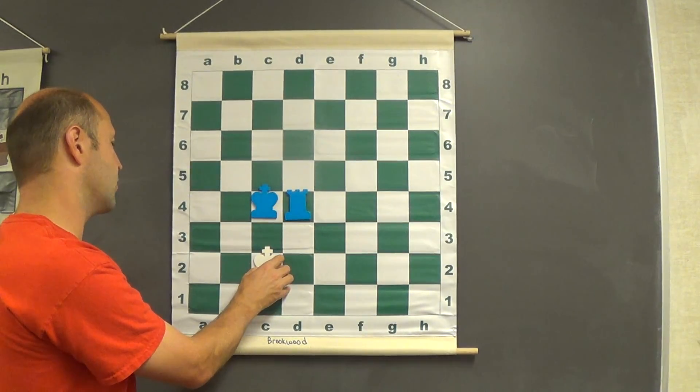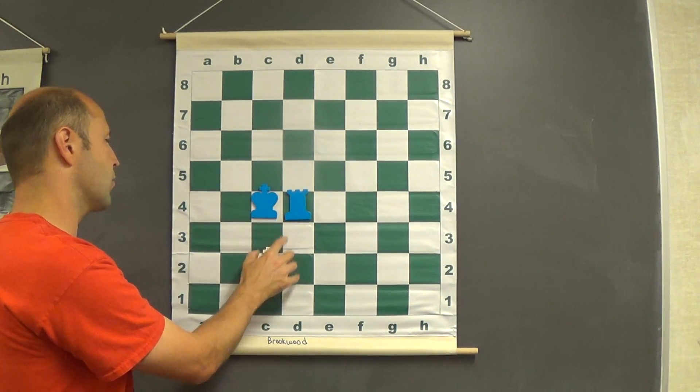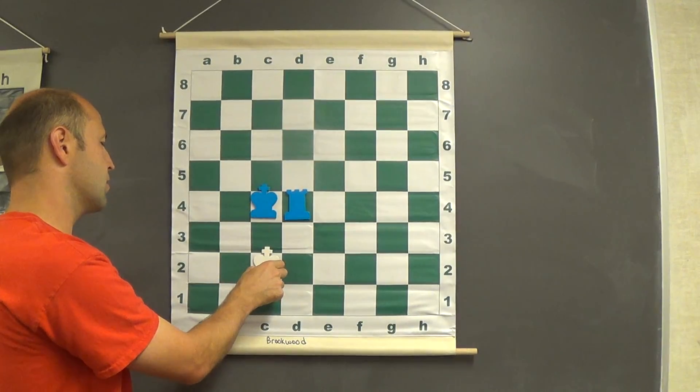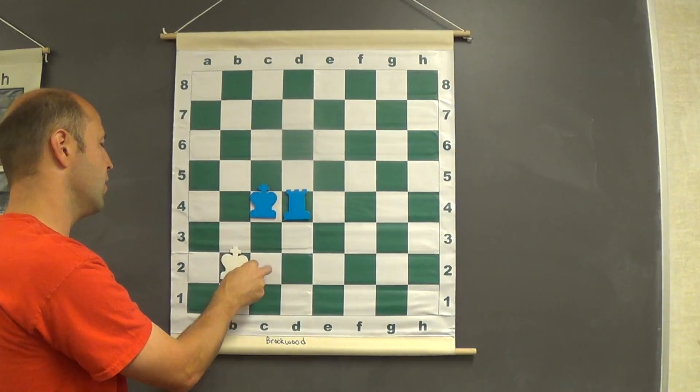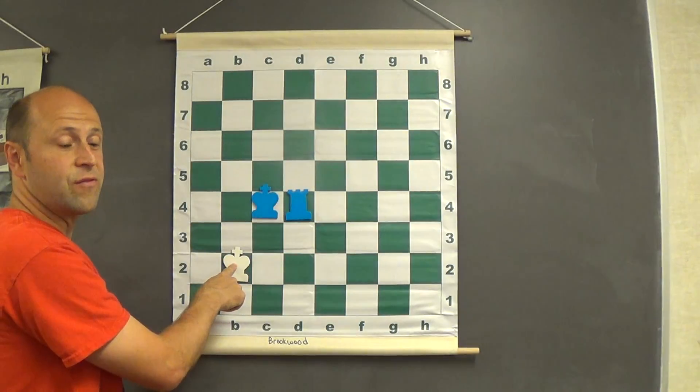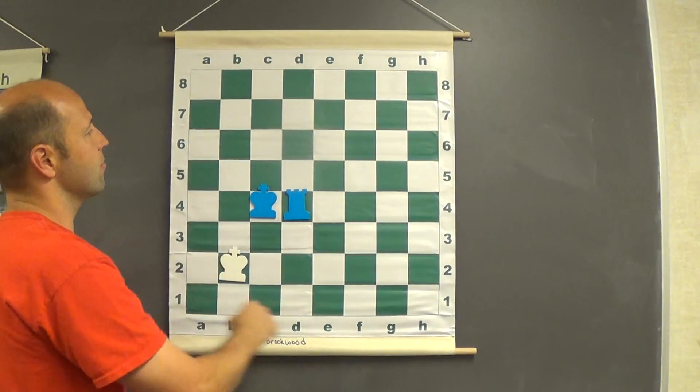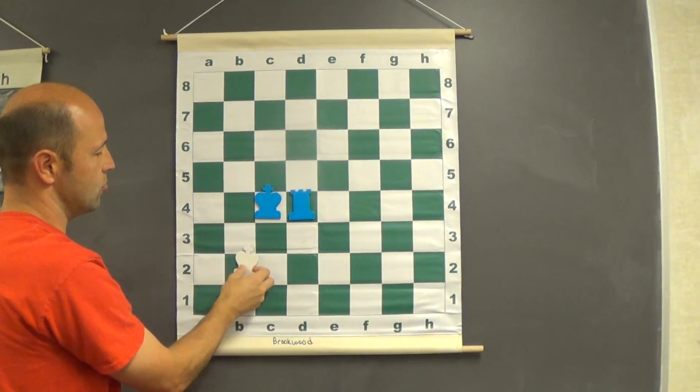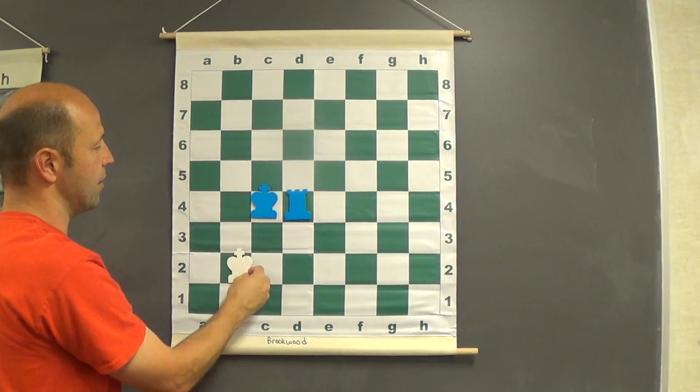White at this point is going to then have to choose. Either way the box will get smaller. Number one rule, if you are white, never go to the outside edge. In this case we had two choices, down or over. Avoid the outside edge.